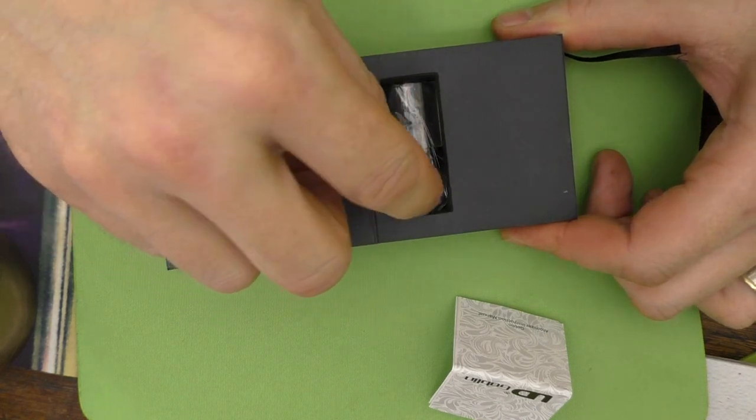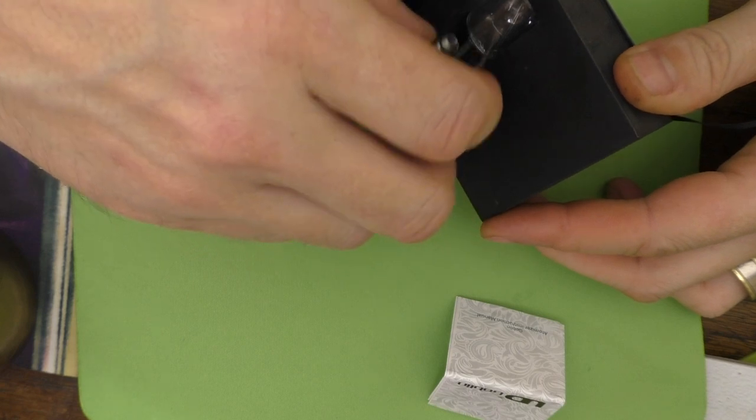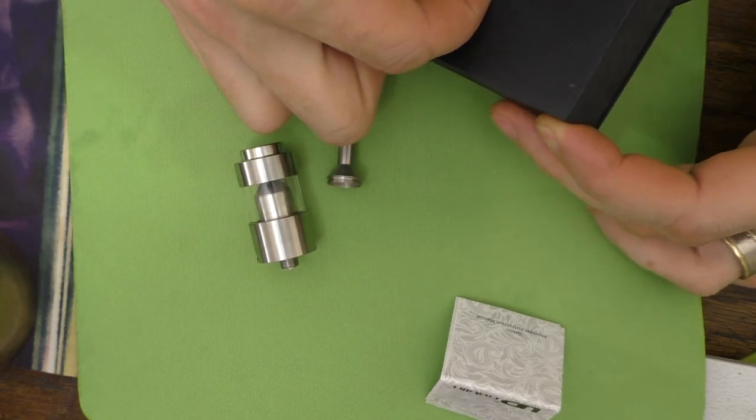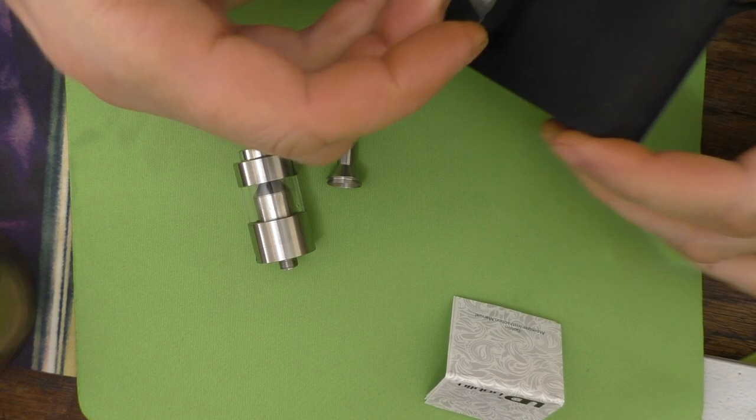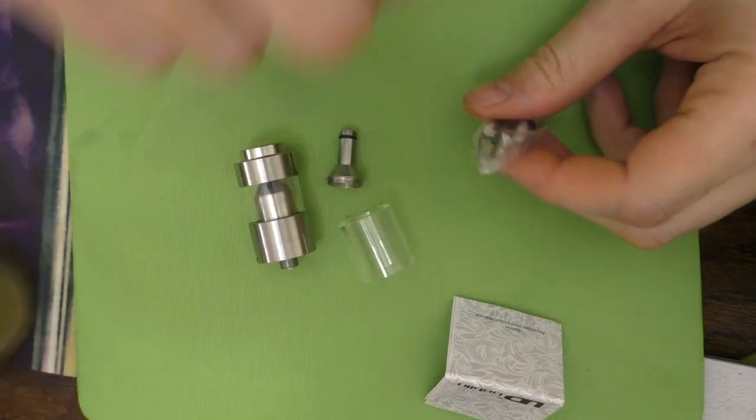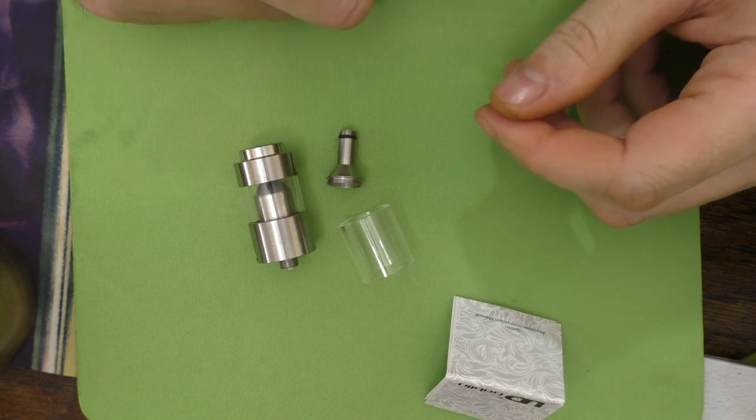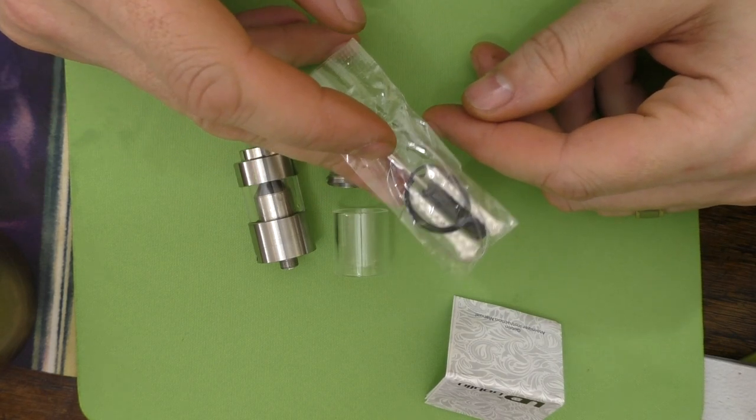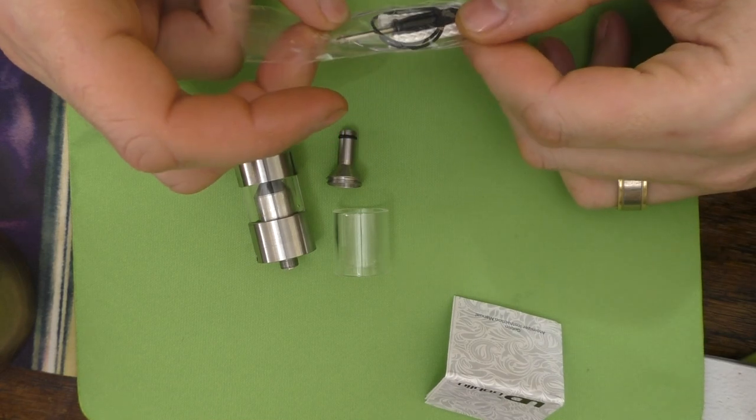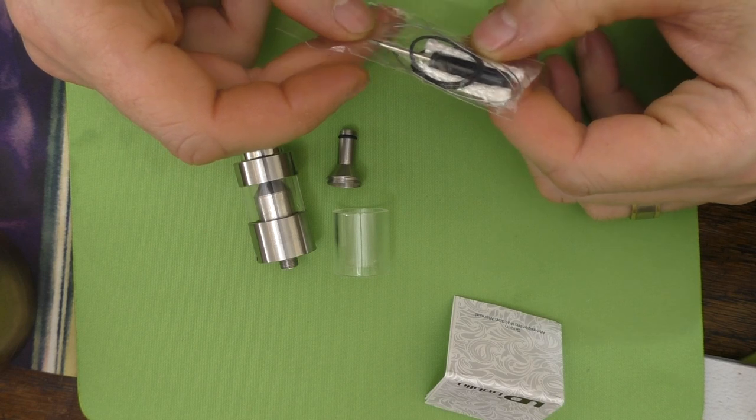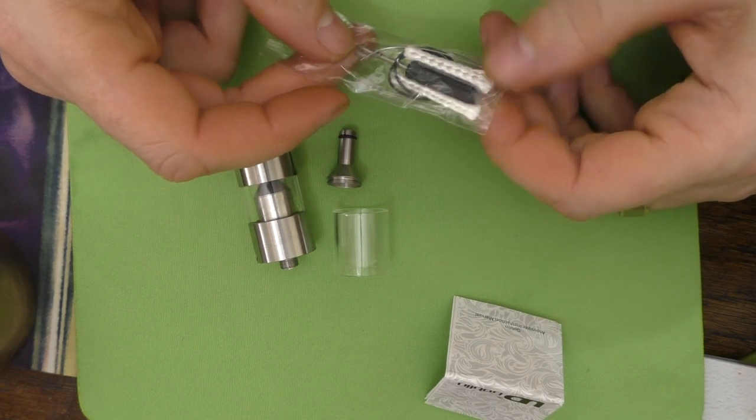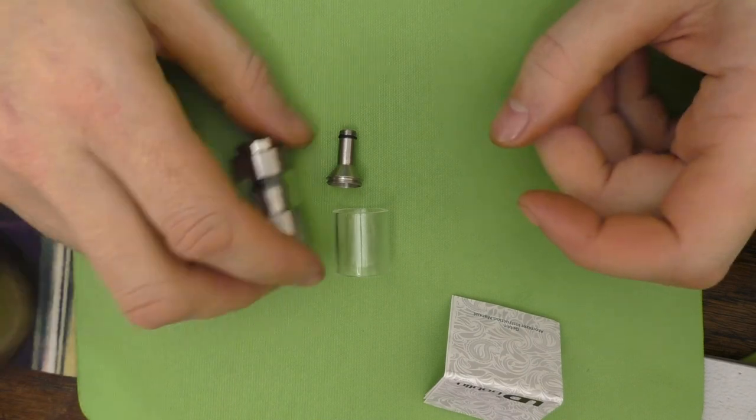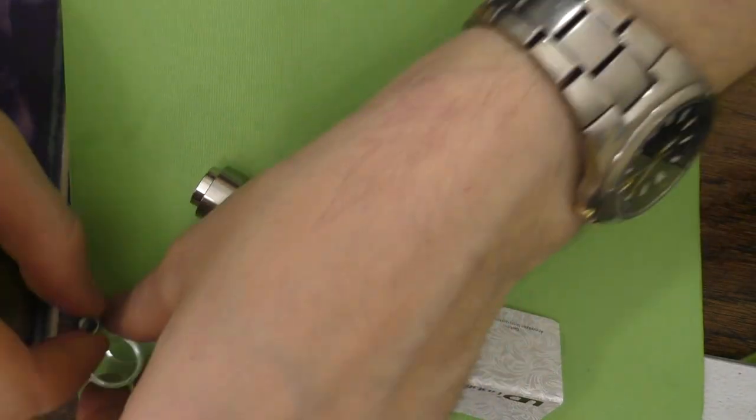And flip it over. And on the back, you get a taller chimney section and a taller glass tank for the increased capacity mode and your usual bag of bits.